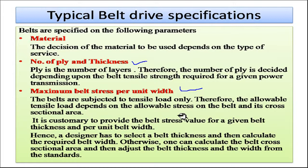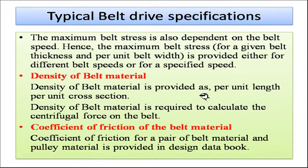Stress and cross-sectional area are the two important things to consider. It is customary to provide the belt stress value for a given belt thickness and per unit belt width. Hence a designer has to select a belt thickness and then calculate the required belt width, or alternatively calculate the belt cross-section area and then adjust thickness and width from standards. Either belt width or belt thickness — one parameter is decided and the other is found out. Maximum belt stress is also dependent on belt speed.